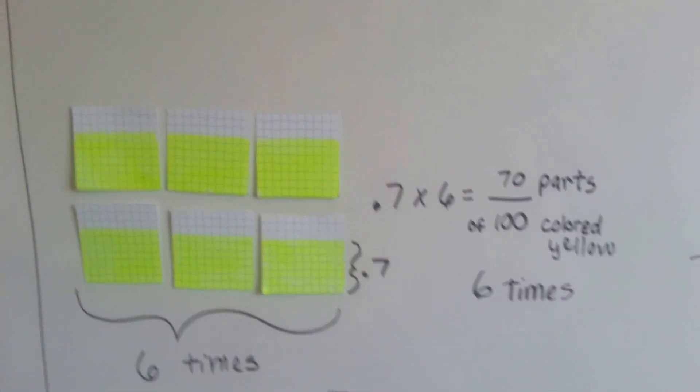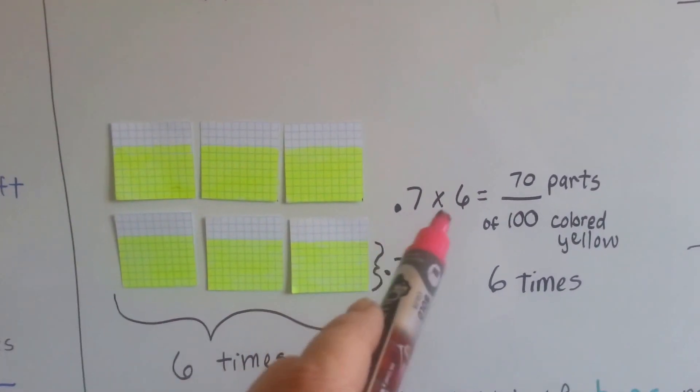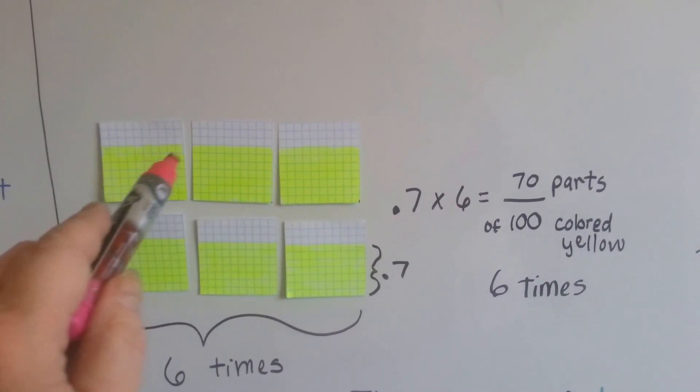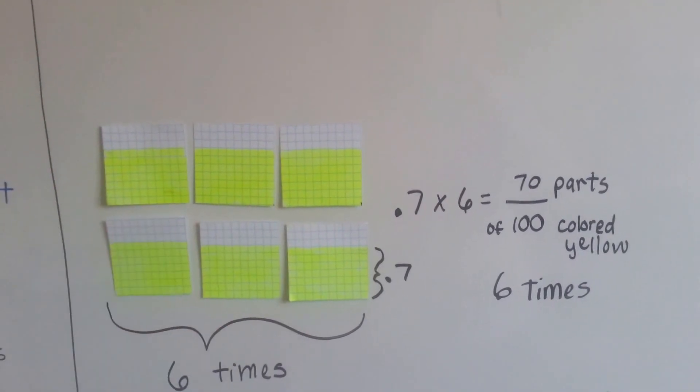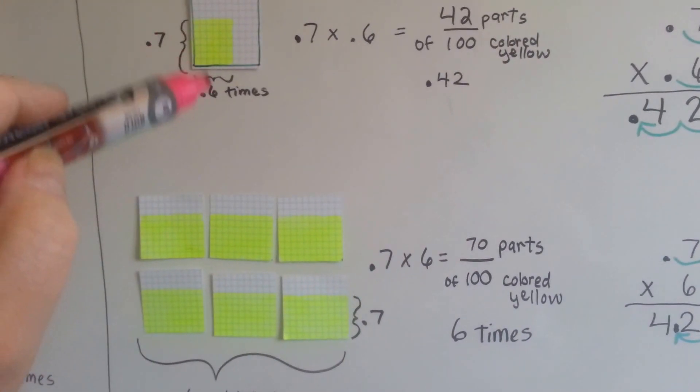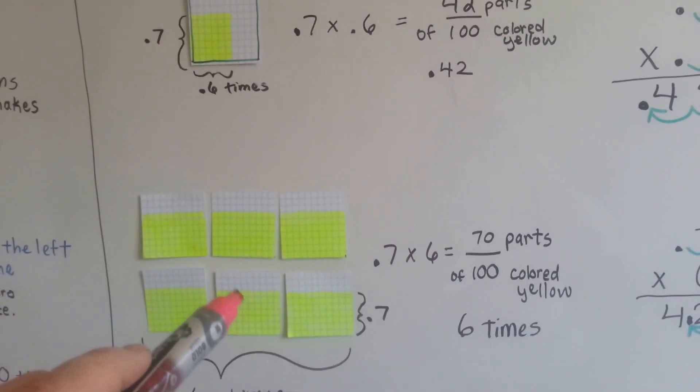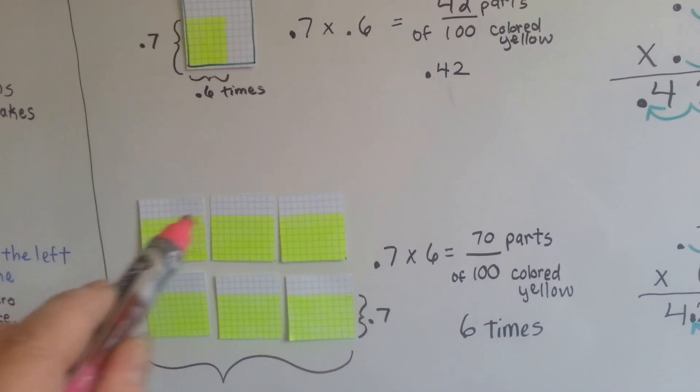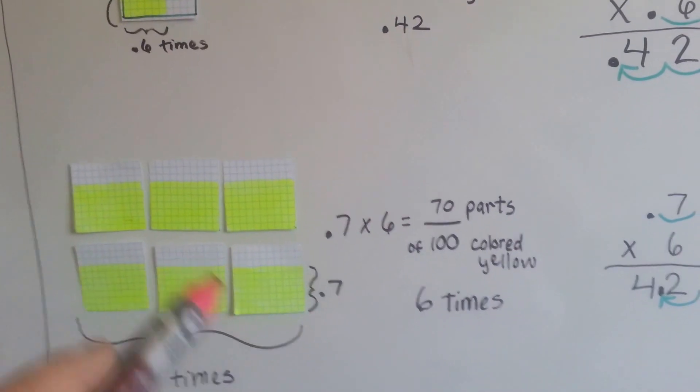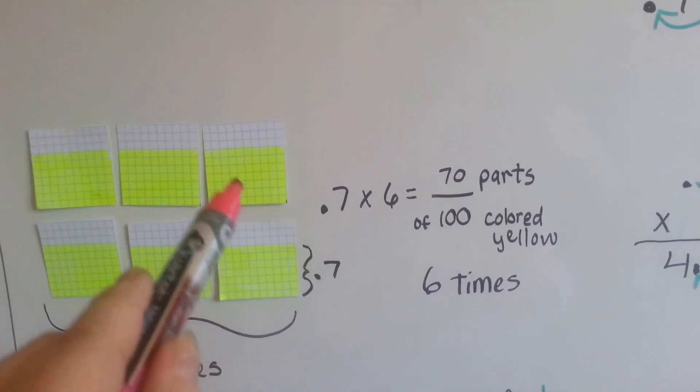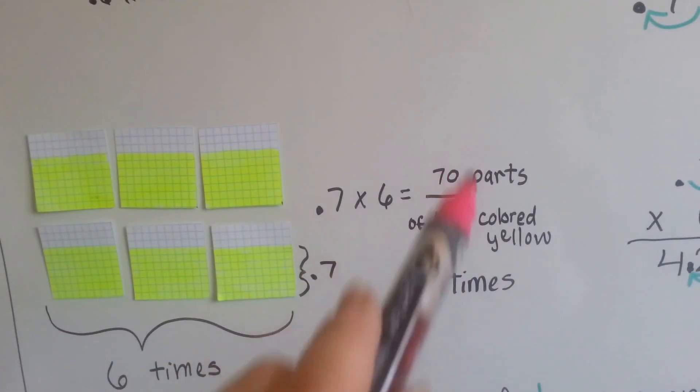All right. Well, look at this. This one was seven tenths times six tenths. What happens if we do only we do a full six? Well, here's seven tenths of the card filled in six times. Can you see the difference between this one little card multiplied by six tenths of the time and seven tenths multiplied six times? Now this card is filled in seven tenths of the card is filled in, but we did it six times.